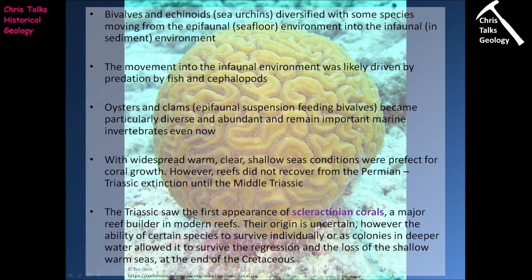The origin of the scleractinian corals is actually a little uncertain. However, one thing that makes them very resilient is that they can survive across quite a broad range of water depths. As we moved towards the end of the Mesozoic and the warm shallow seas disappeared, this stressed other marine invertebrate groups, but the scleractinian corals — being able to survive in a range of conditions — managed to make it through the KT mass extinction in better shape. This gave them a very strong starting point in the Cenozoic, where they explode and become the dominant reef-building organism.